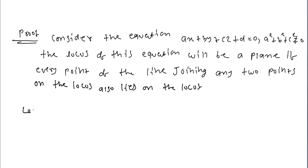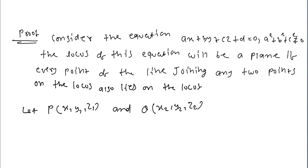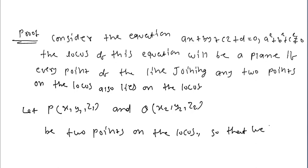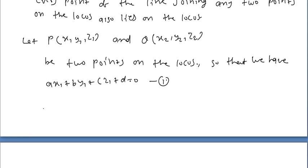For this, we choose two points: let P be (x1, y1, z1) and Q be (x2, y2, z2), two points on the locus. So we have Ax1 plus By1 plus Cz1 plus D equal to zero — let this be equation 1. Similarly, point Q also lies on the plane and satisfies Ax2 plus By2 plus Cz2 plus D equal to zero — let this be equation 2.